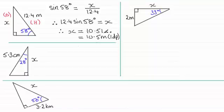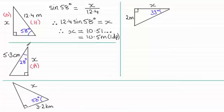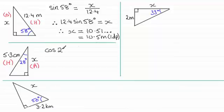Check your answer: 10.51 should be smaller than the hypotenuse, and it is, so good chance it's correct. Moving to the next example, we label the sides. The side X we want to find is the adjacent side, so label that A. The longest side, opposite the right angle, is the hypotenuse. So we have the cosine ratio — cosine compares the adjacent with the hypotenuse. Cos(28°) = X / 5.3.